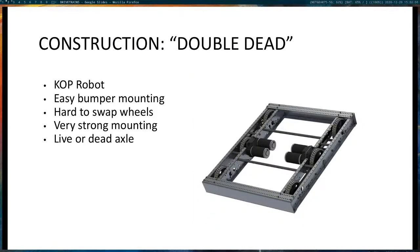Another common construction method — used in the KitBot — is the doubly-supported dead shaft, where dead shafts are placed between two side rails. It's very simple, cheap to make, and easy to mount bumpers to. The downside is wheel swapping is harder — you may need to get inside the robot, unscrew a dead axle, drop the whole wheel, deal with the chain, put the new wheel on, slide the chain back, and reinstall everything. Wheel swapping is significantly more involved than on a West Coast Drive.